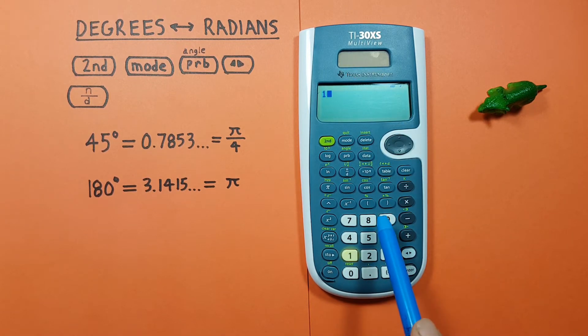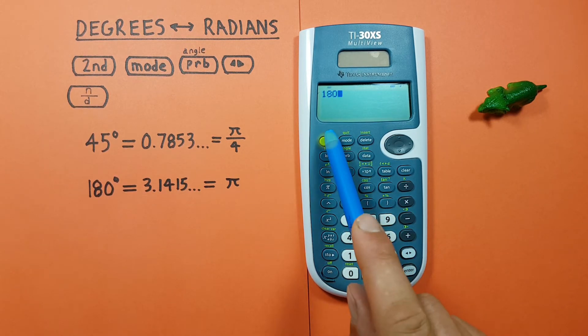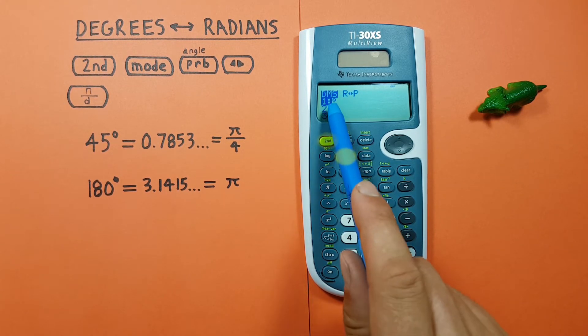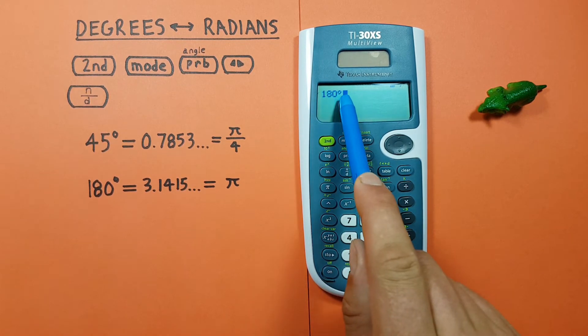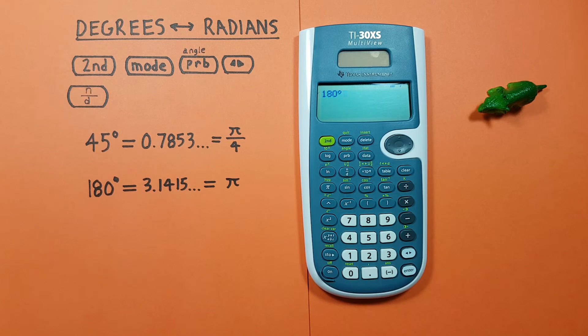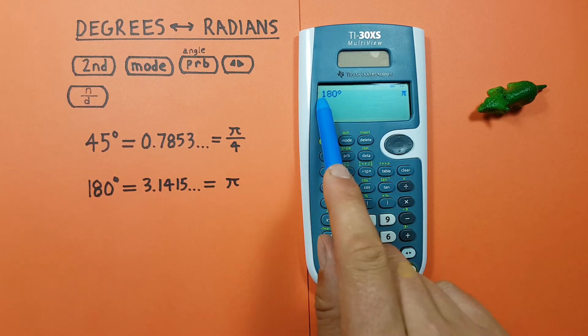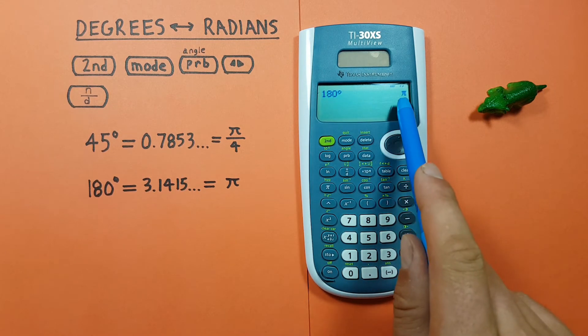Next, we put our degrees on the screen, so 180. And then second angle and choose the degrees to let our calculator know this is 180 degrees. And we press enter.